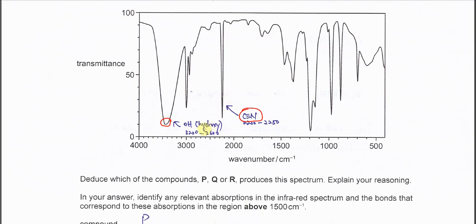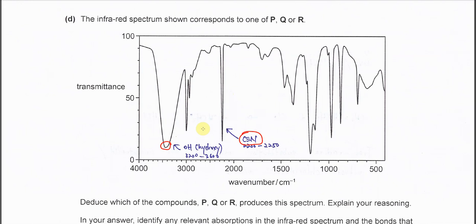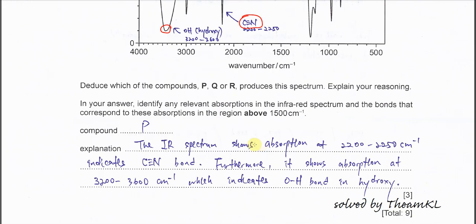So once we identify that, we are quite sure this IR spectrum is for the P. For P. Because P has these two functional groups. Compound P. Answer. Explain.